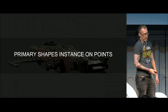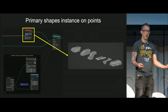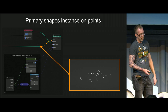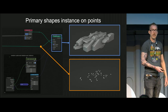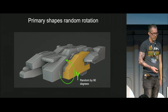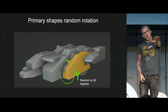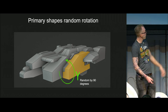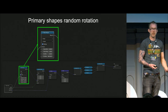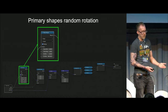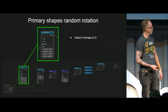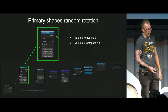Primary shapes instance on points. Now we have scattered our points and we take in these primary shapes and plug them into the points. Now I want to add that random rotation along the Y axis. We want it to rotate along the direction of the ship. I have a custom node group. I have an input value between 0 and 1, then I remap that to a value between 0 and 360. So a value of 0 remaps to a rotation of 0, 0.5 remaps to 180, and 1 remaps to 360.